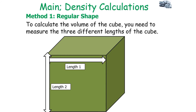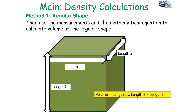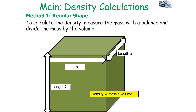For example, because it's a cube, we measure the three lengths of the cube. We then use the mathematical equation associated with that shape to work out the volume — so volume equals length 1 times length 2 times length 3. Once you've calculated the volume, take the mass measurement from the balance and divide mass by volume to work out the density.